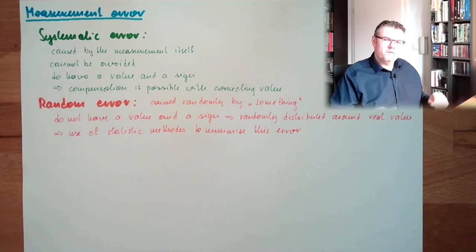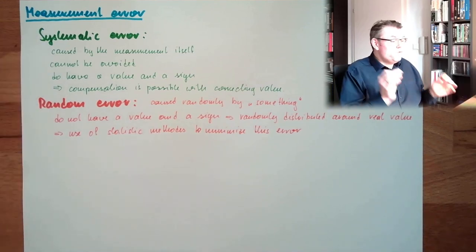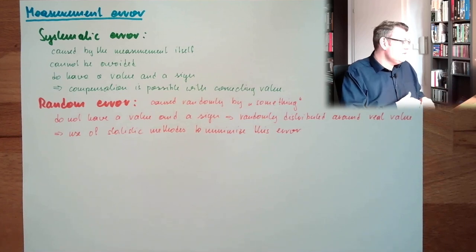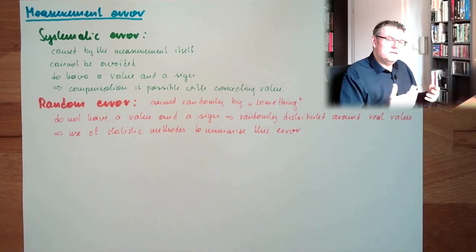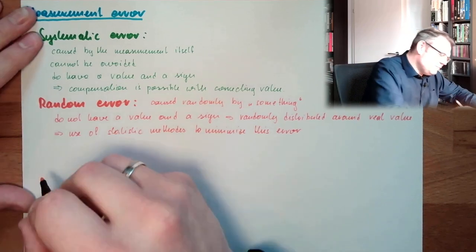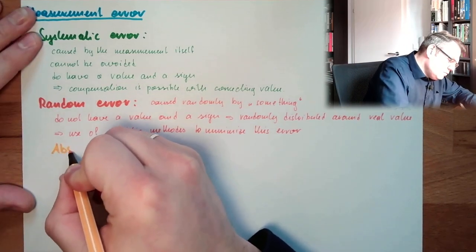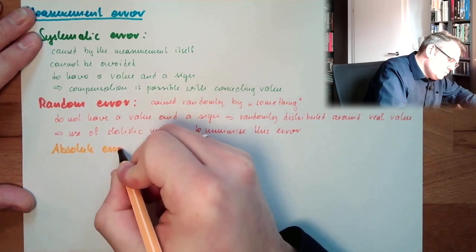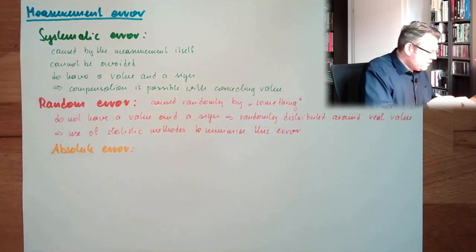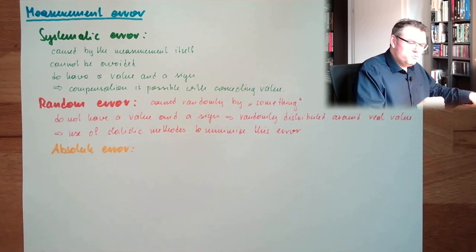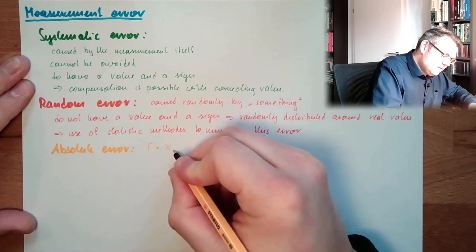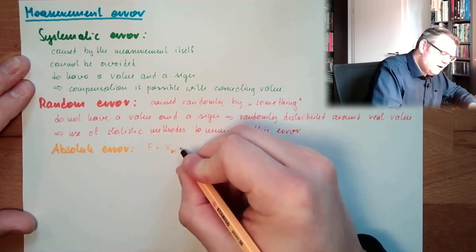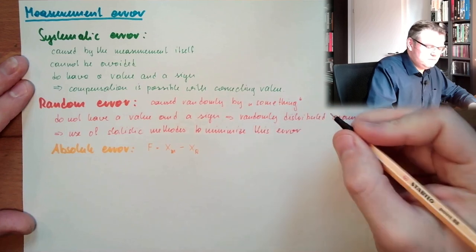So, systematic errors we can deal with — we are done. Random errors we also have to deal with, but we cannot compensate them. Now let's look at some naming conventions. We usually talk about the absolute error, typically shown with F, which is the measured value minus the real value.